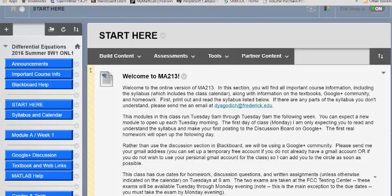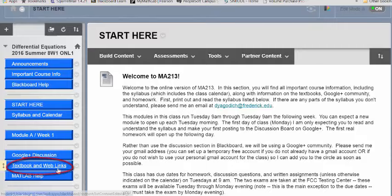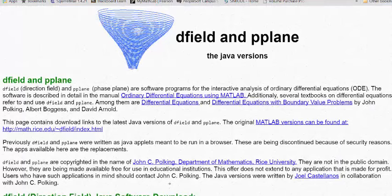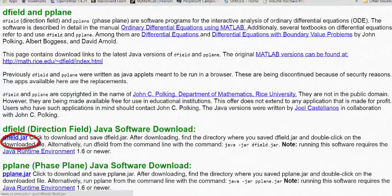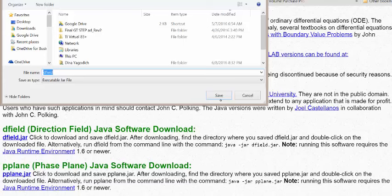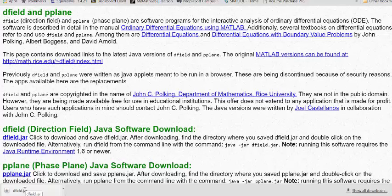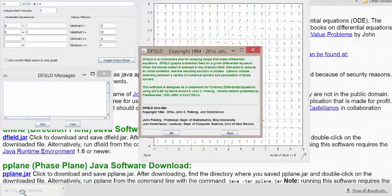To get to dField, what you'll do is go to your Blackboard site and click on textbook and web links. From there you'll see dField and pplane, and that'll bring you to this website. If you click on dField jar, save it, and then run it. I'm using Chrome. That seems to work fairly well. Then the software will pop up.